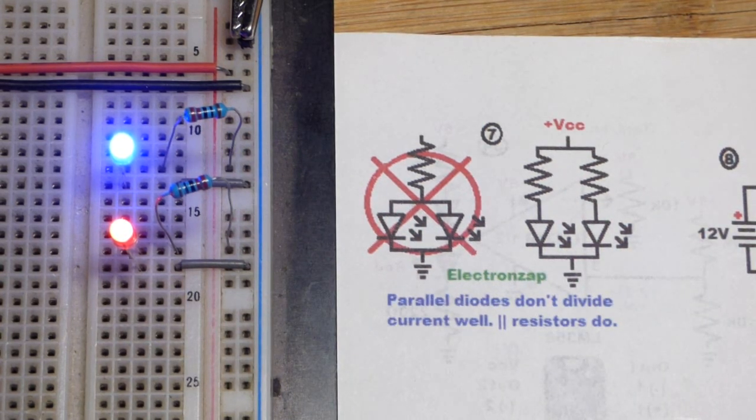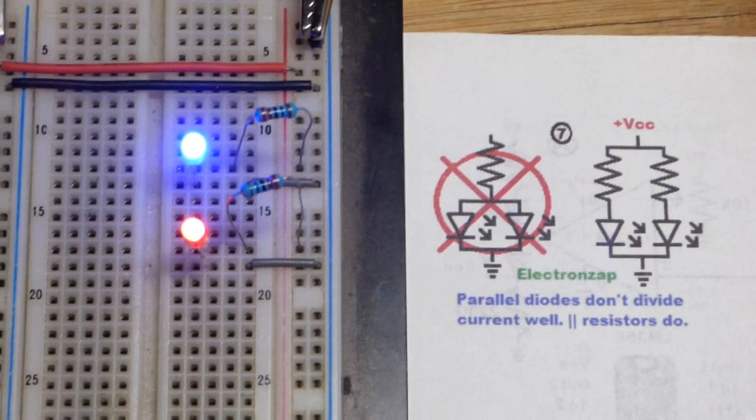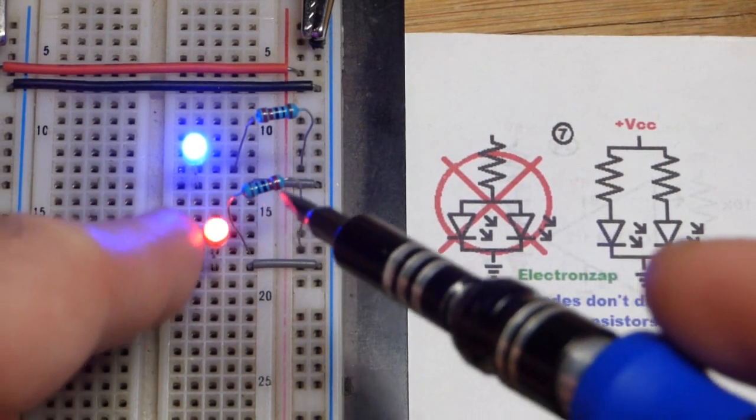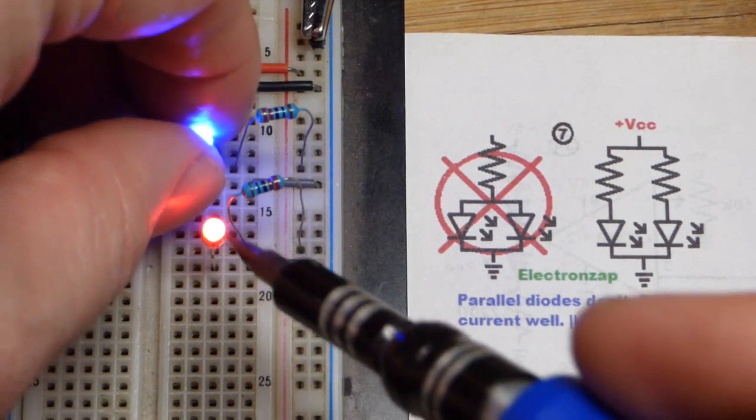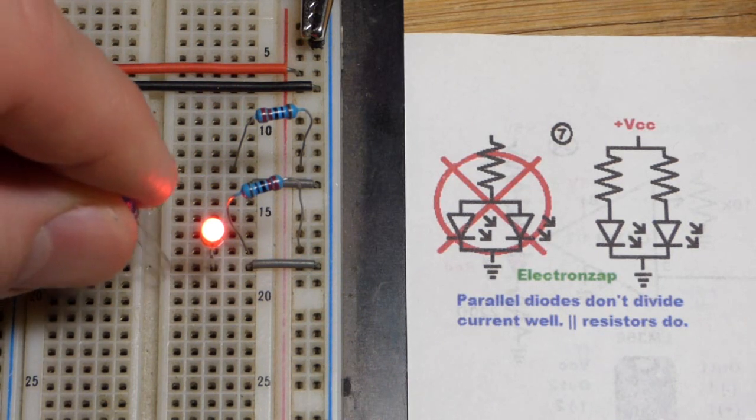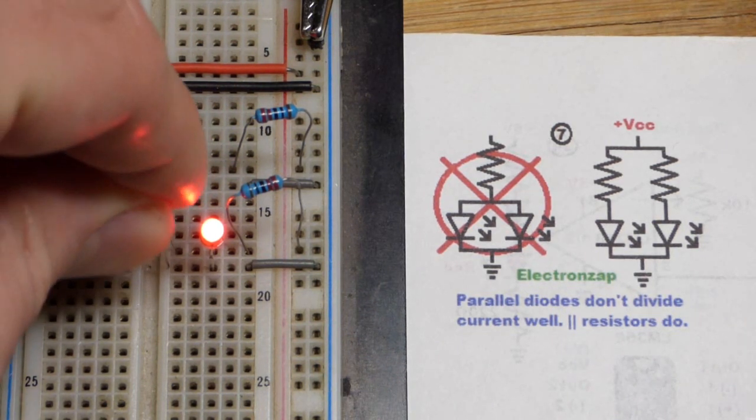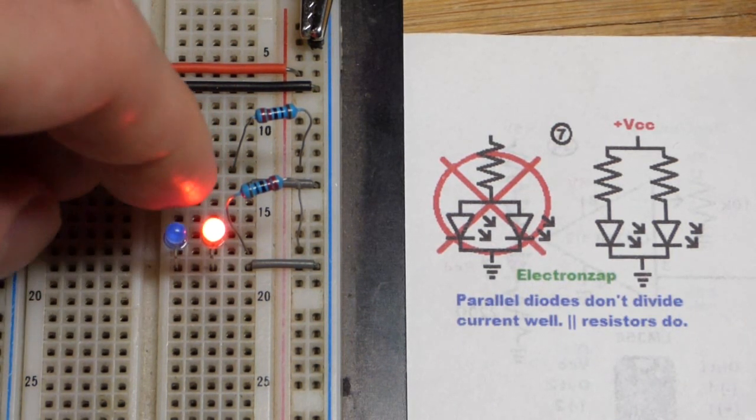You may have the temptation to just use one resistor, a lower value resistor, because these will split up the current. But as you can see there, these two LEDs do not split up the current.